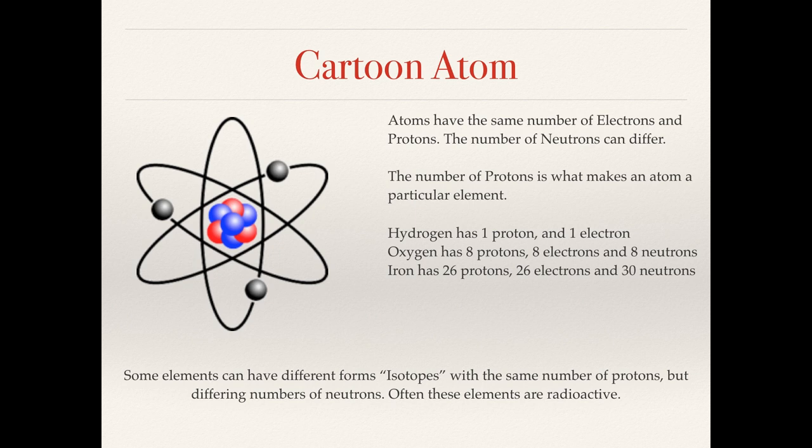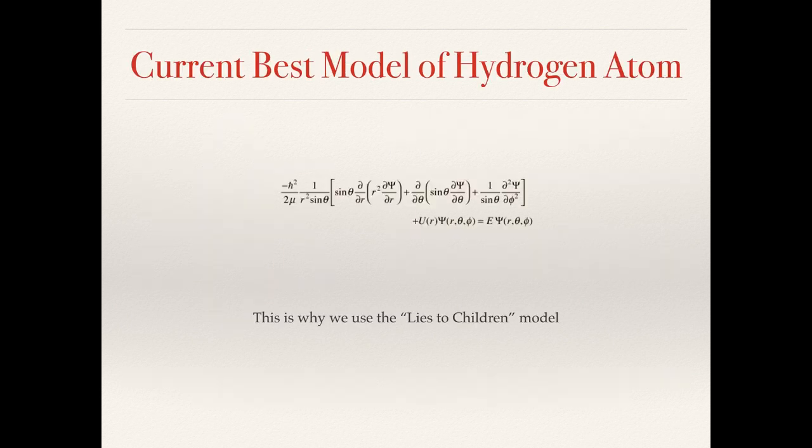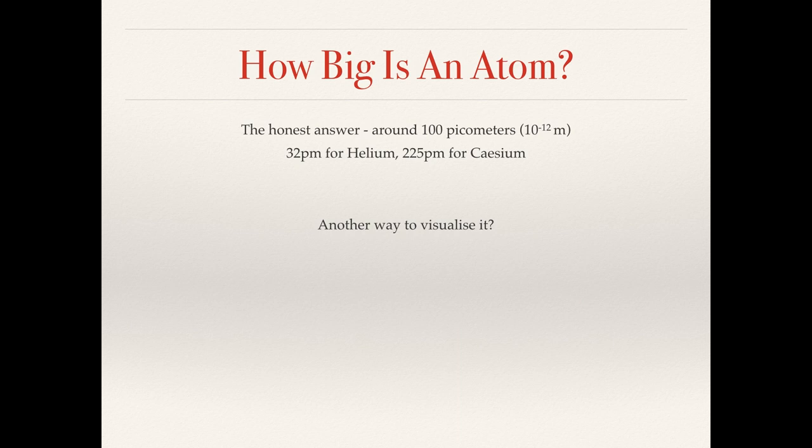Why do we use the cartoon atom? We use the cartoon atom because this is currently the best model of the hydrogen atom, the Schrödinger equation on screen now. This is not friendly. This is not easy to get into. This is why we use the lies to children model of the atom. So we know atoms are probably fairly small, so let's get an idea for how big an atom is. The honest answer is, it's about 100 picometers, so 10 to the minus 12th of a meter. If you're not entirely familiar with this form of numbers, I will do a separate video on this. The smallest atom is helium, about 32 picometers. Cesium is the largest at about 225 picometers. These are numbers. This is not entirely easy to visualize, so hopefully the next couple of slides will give an idea.